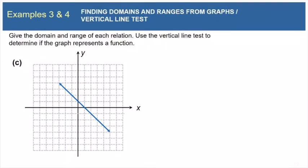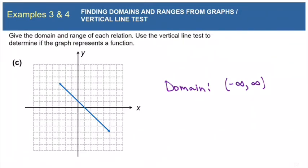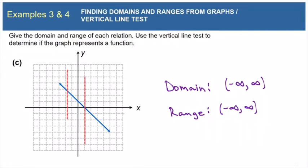In part C, our graph is a straight line that continues forever to the left and to the right. So the domain is (-∞, +∞). The line also continues up forever and down forever, so the range is (-∞, +∞) as well. Any vertical line you draw is only going to intersect that line at one point, so there are no x values being repeated, and therefore this graph does represent a function.